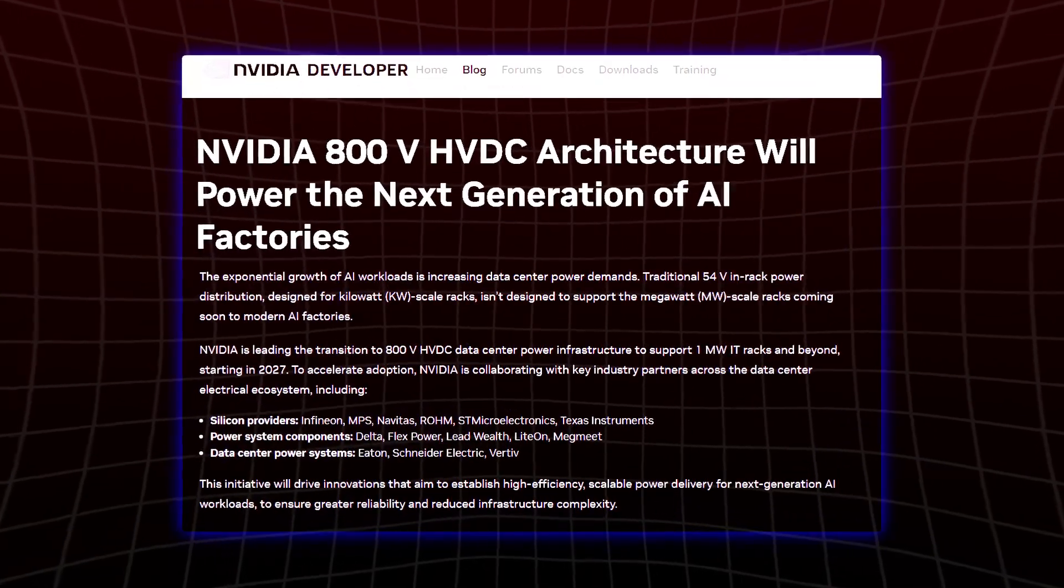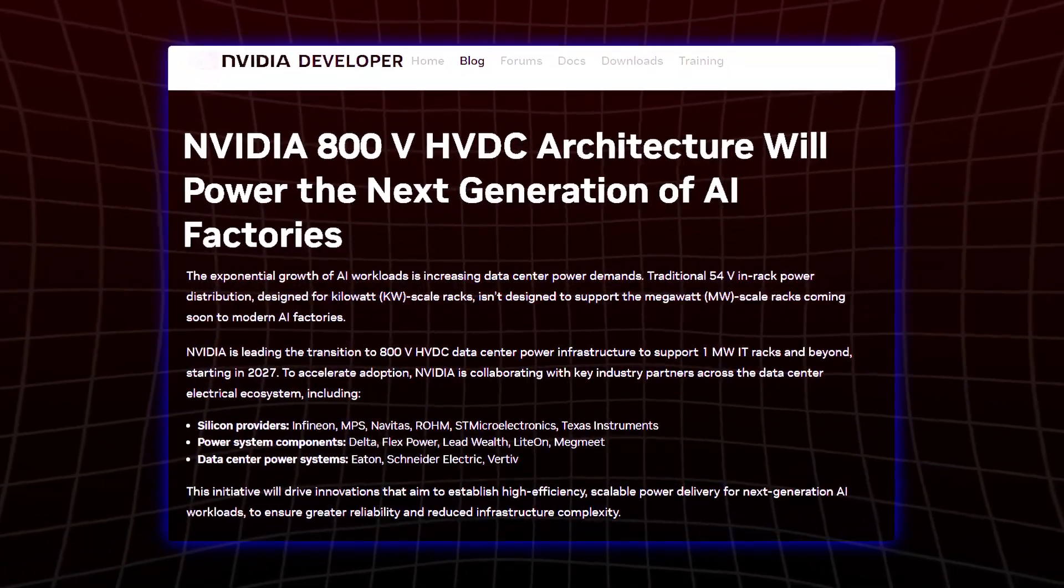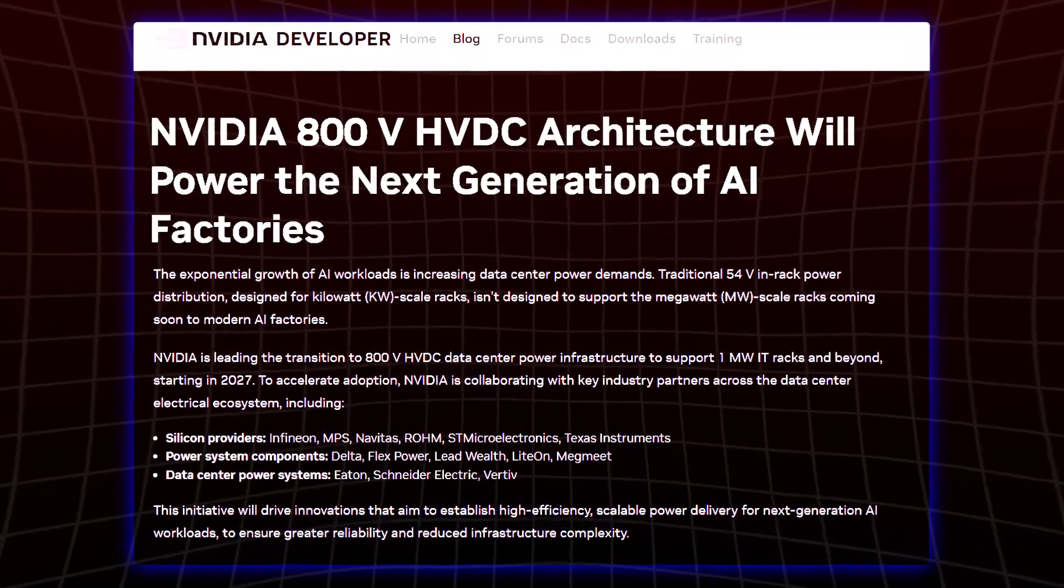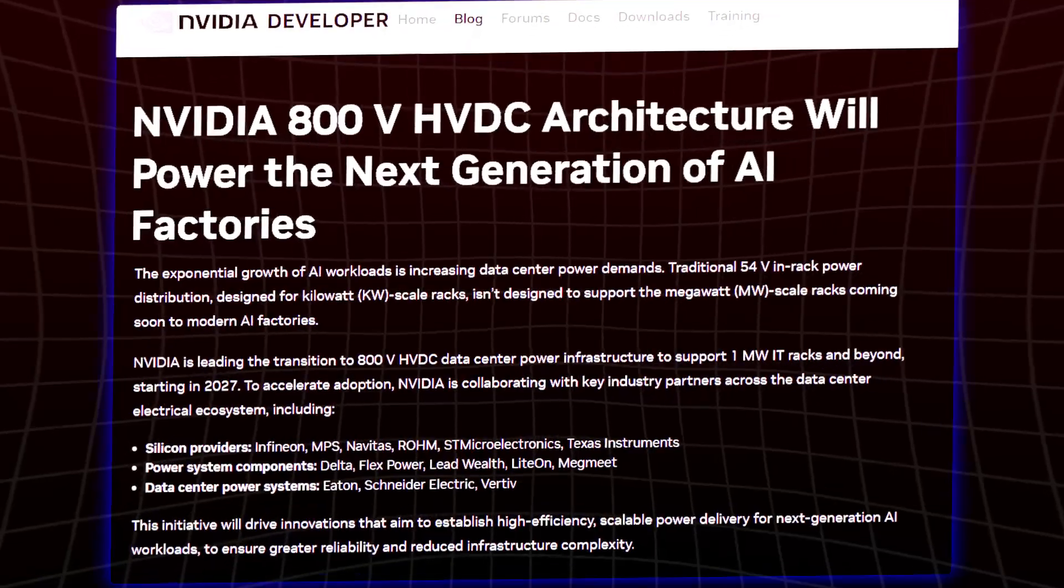NVIDIA's future GPUs, especially the upcoming Rubin Ultra architecture due by 2027, will require up to 5x more power than today's systems. And that demand is starting now.